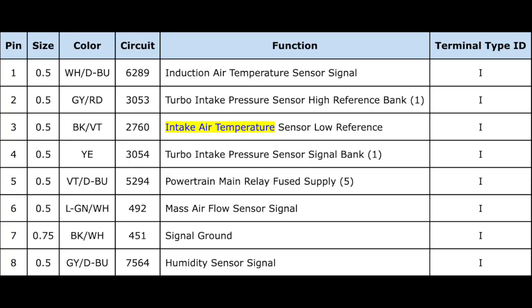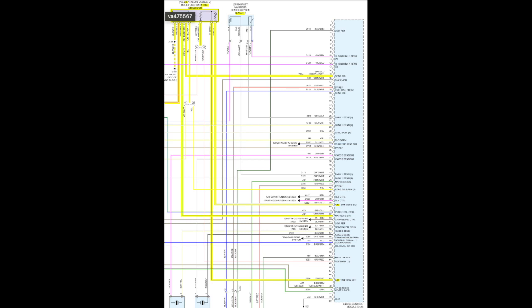Here is a chart that shows us what each of the eight wires represents, the colors of the wires, and the circuit numbers. On the next couple of slides is a diagram relating to the IAT/MAF sensor and its relation to the PCM. Please take a second and pause if you need to.